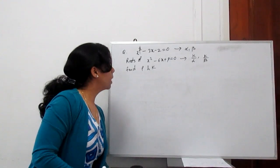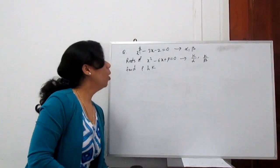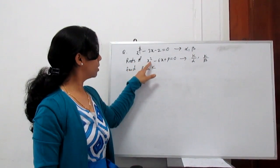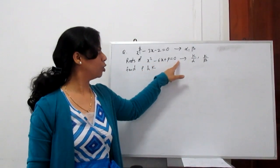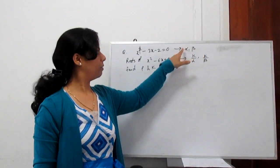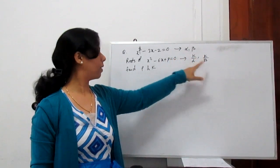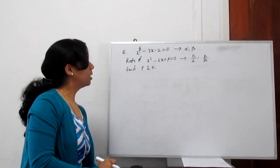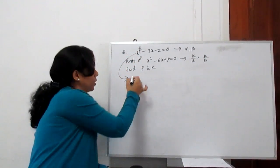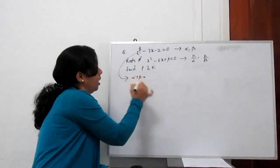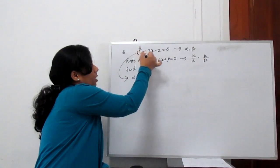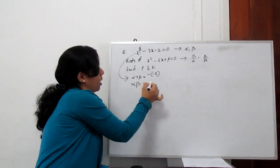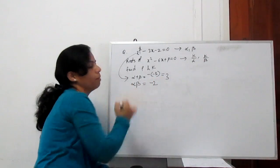One more example: the equation x² minus 3x minus 2 equals 0 has roots alpha and beta. A second equation x² minus 6x plus p equals 0 has roots k by alpha and k by beta, where p and k are constants — find p and k. From the first equation: alpha plus beta equals minus(minus 3) by 1, which is 3. And alpha times beta equals minus 2 by 1, which is minus 2.